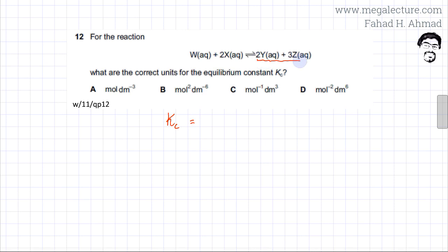So your products are Y and Z, so it would be the concentration of [Y], and since there are two Y's in the equation, it's going to be squared. The other product is Z and that is going to be cubed. We divide that by the reactants: the concentration of [W] and [X]. Because the coefficient for X is 2, it would be squared.